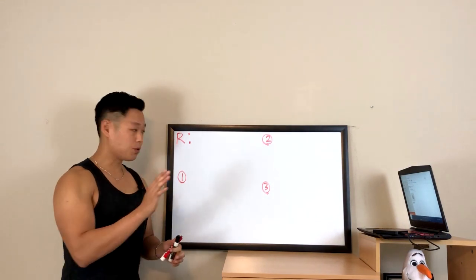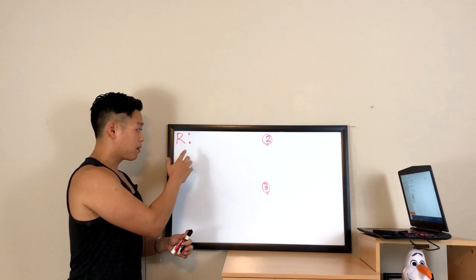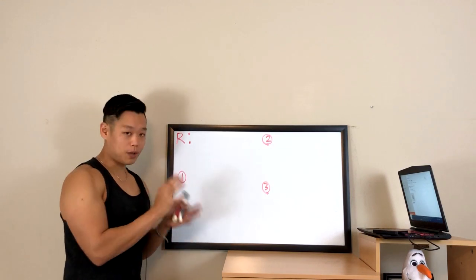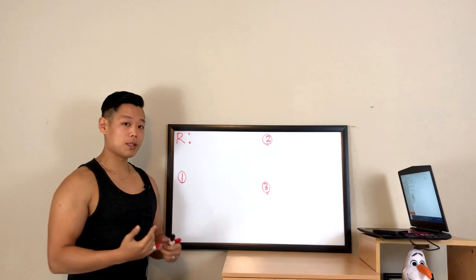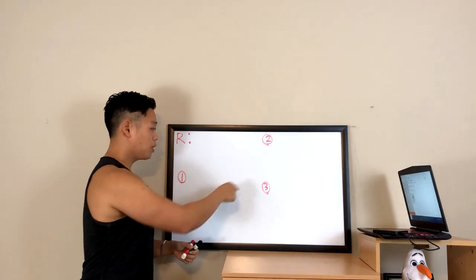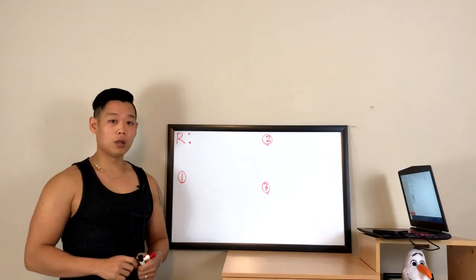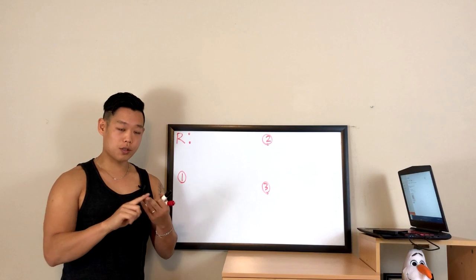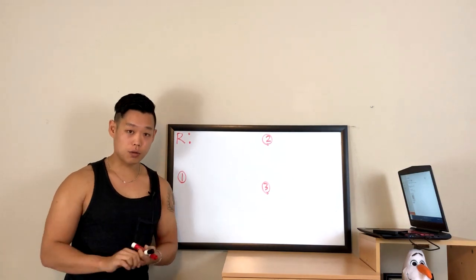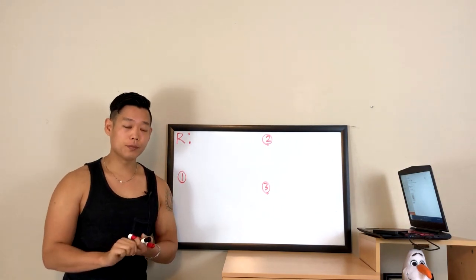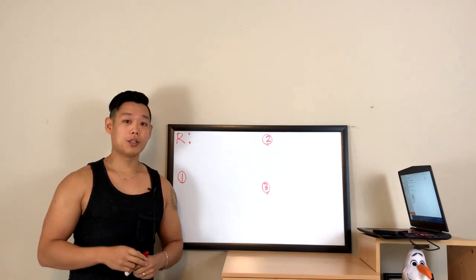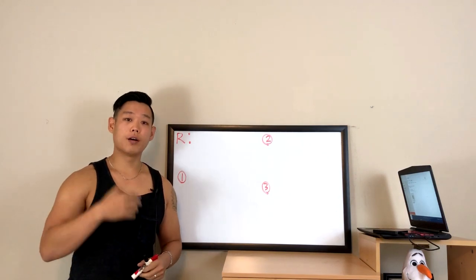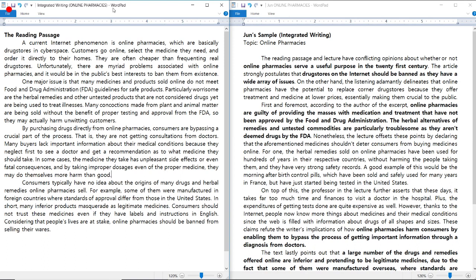Before I show you the reading passage again, I want all of you to copy the note-taking diagram for the reading passage. 'R' is going to be used for the reading's opinion, and numbers one, two, and three are going to be utilized when you're organizing the reading's first, second, and third reasons plus the major details. Now let's go over to my laptop and look at the reading passage again with a fresh pair of eyes.